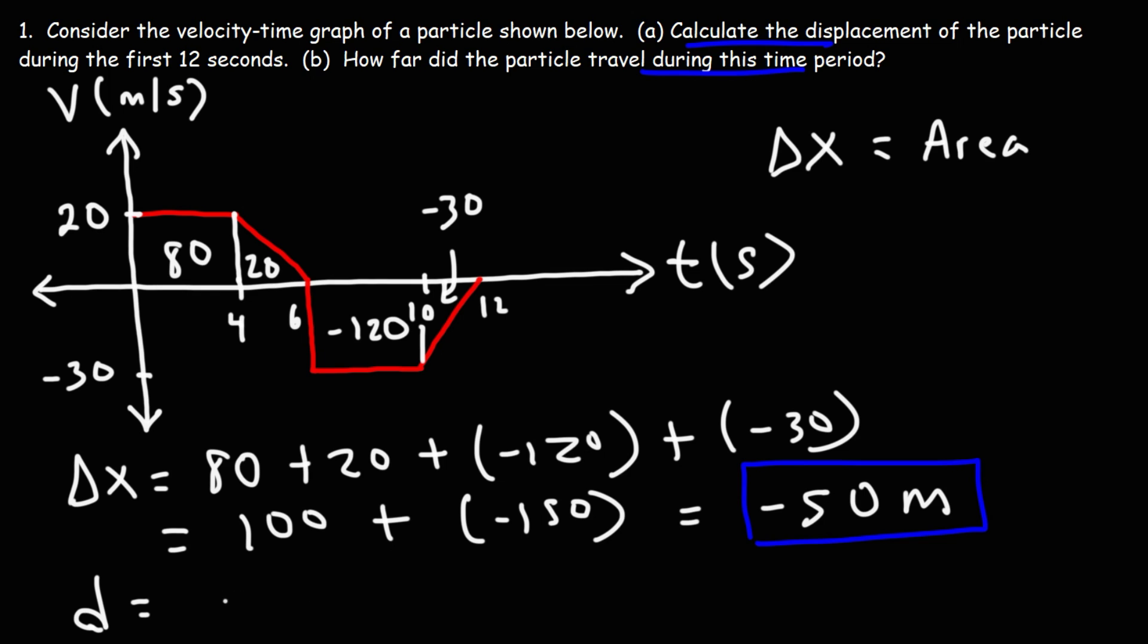So the total distance traveled is going to be 80 plus 20 plus 120 plus 30. So this is going to be 100 plus 150, which will give us a total value of 250. So that's how far the particle traveled during this time period.